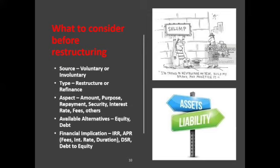Number four will be available alternatives, because there is a cost-benefit to every decision we take. You want to see whether you really need this or want to go another route. If you have equity that can take over the debt and you'd be more comfortable with equity, you have to consider that. Last but not least is the financial implication, where we look at the internal rate of return. If I'm going to restructure a facility, my internal rate of return must be higher than the interest rate being offered, otherwise I will be gradually moving my capital to the bank. We also look at the APR — the real cost the borrower faces — which is a function of the fees, the interest rates, and the duration.